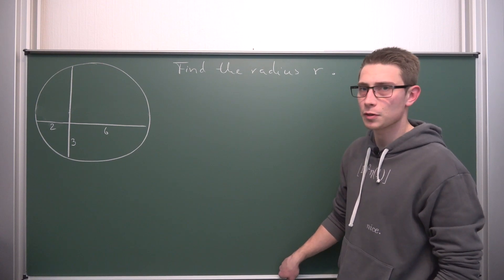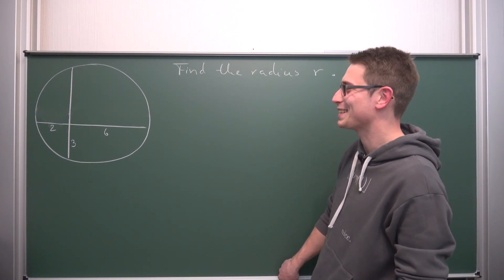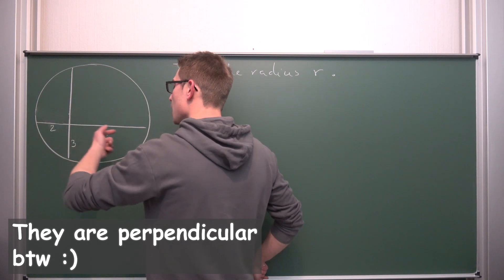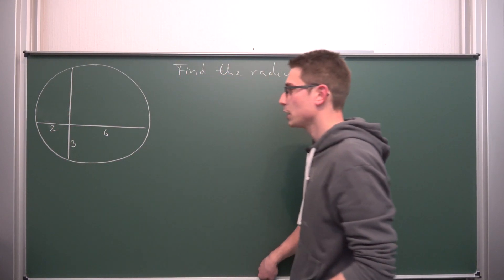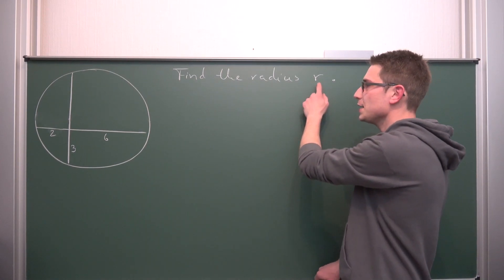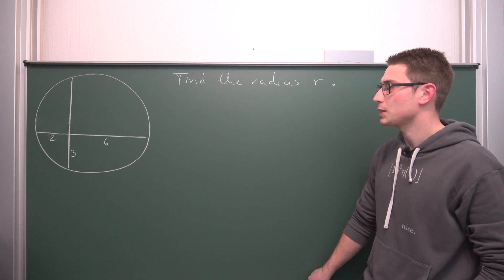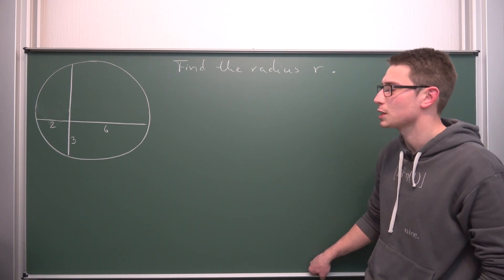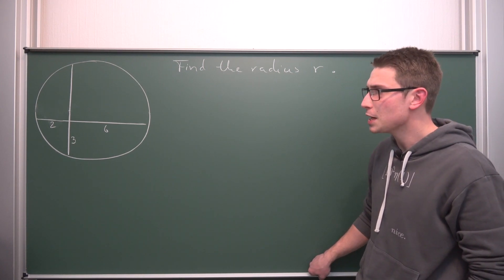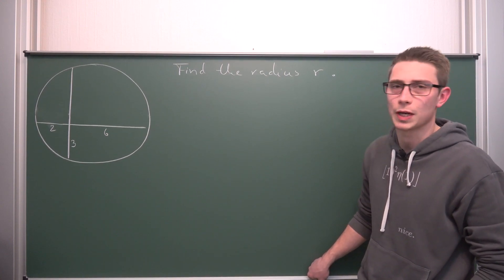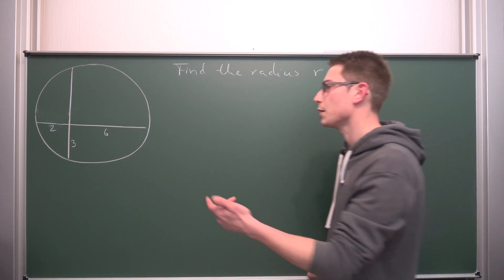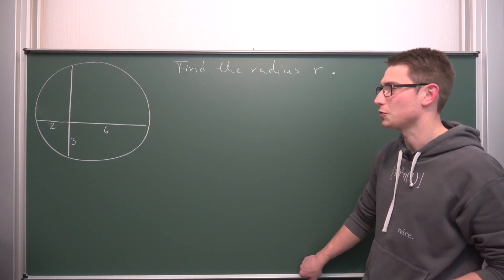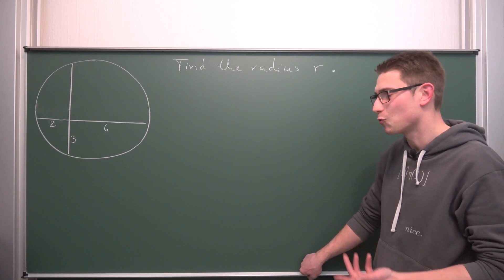We have a circle given, approximately a circle you can see here. We also have two chords given. One with the length of eight, and for the other one we only know this part down here with a length of three. And what we need to find out is the radius r today of the circle. Quite an interesting problem I suppose. I haven't solved through it yet, so it's rather improvised, but I'm pretty certain that we can solve it.